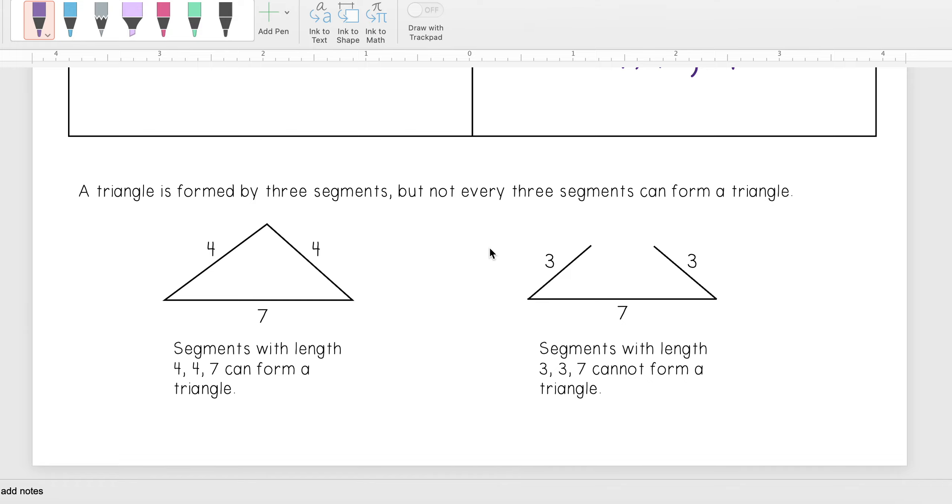So in order to form a triangle, we have to have a certain relationship between the sides of the triangle. We know a triangle is formed by three segments, but not every three segments can form a triangle.